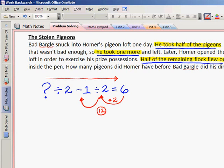Our next arrow leads us to subtracting one. When we work backwards, we do the opposite. So we're going to add one. Twelve plus one gives me thirteen.